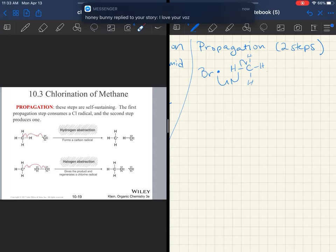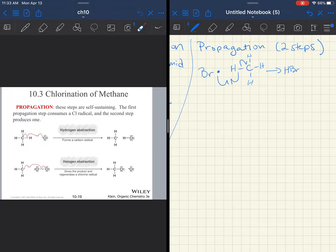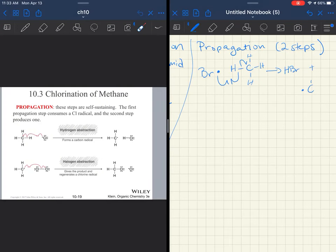That bromine radical is going to interact with that CH bond. In this case, it's methane. So there are four CH bonds. You are going to be doing that hydrogen abstraction. You're going to be making HBr. So you do make some HBr byproduct, but you also make a carbon radical. That carbon radical is going to be very reactive. So that's going to be the intermediate that moves on.